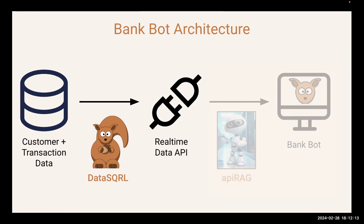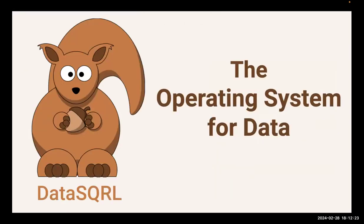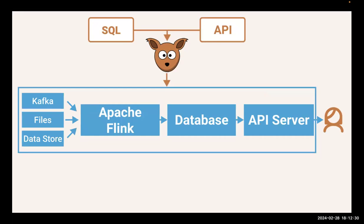Traditionally, you would have to figure out how to pick up the data, process it, store it in a database, and then serve it out through an API layer. With Data Squirrel, you can do the whole thing in a simple step. Data Squirrel acts as the operating system for your data, abstracting away this multi-step data pipeline behind a simple SQL script where you define the logic of what you're trying to do with your data, and an API specification that defines how you want to expose the data. Think of it as the model-view-controller paradigm: the model and controller of what you're trying to do, and the view — the API — that exposes it.